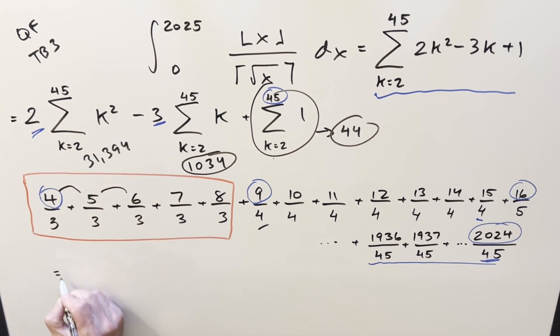So, putting this all together, crunching the numbers, we have 2 times 31,394 minus 3 times 1034 plus 44. And no, I can't do it in my head. So, what we have here for our final solution of this is just going to be 59,730. And that's it.